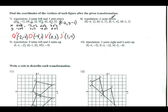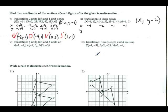Number eight: the rule is two units down, so I'm not doing anything to the X, but Y goes down 2 — Y minus 2. The X values stay the same: negative 4, negative 2, negative 1, and negative 1. For the Y's I subtract 2 each time: 1 minus 2, 5 minus 2, 4 minus 2, and 2 minus 2.